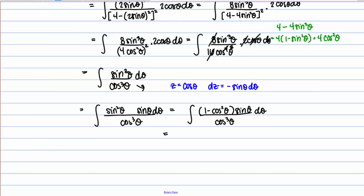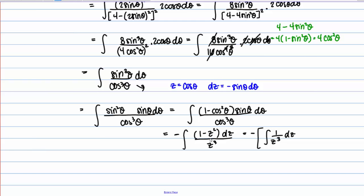Going through with the substitution, 1 minus cosine squared of theta becomes 1 minus z squared. Sine theta d theta is dz with a negative sign, so we put that negative out front. The denominator cosine cubed becomes z cubed. Now we have this integral in terms of z. To evaluate it, we split the fraction: the negative times the integral of 1 over z cubed dz, minus the integral of z squared over z cubed dz.